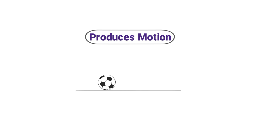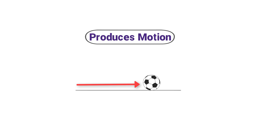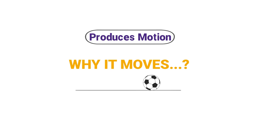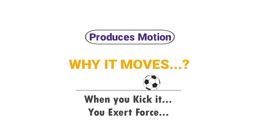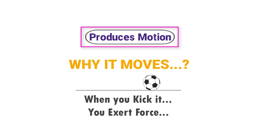Consider a football at rest — a stationary football. When you kick the football, motion is produced in the football. The question is: why does the football move when you kick it? It is because when you kick it, you exert force on it. The force produces motion in it and changes its state of rest. Remember that force can produce motion in stationary objects.